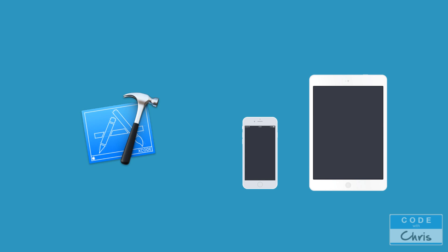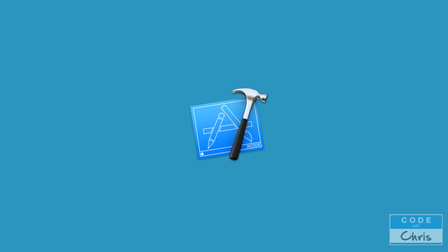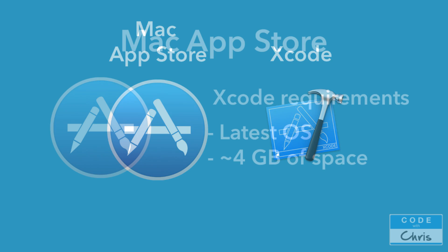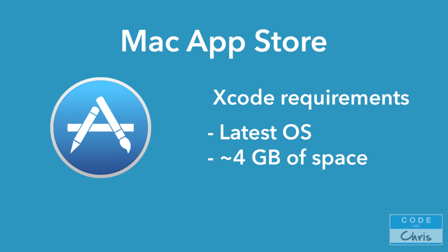It actually needs a Mac computer with the Mac operating system. So what is this magical software we use to build apps with? Well, it's called Xcode, and it's available for free in the Mac App Store. If you get access to a Mac with the latest operating system, you're going to see an App Store installed — there's going to be an icon in the Applications folder where you can access it, kind of like the App Store on your iPad or iPhone, where you can search for Xcode and download it for free. It is a pretty big download — it usually requires the latest operating system and about 4 gigs of free space.